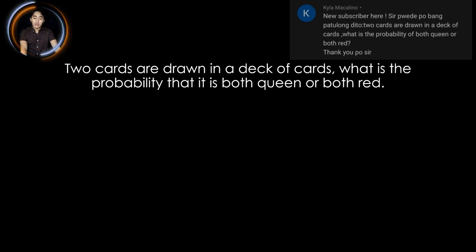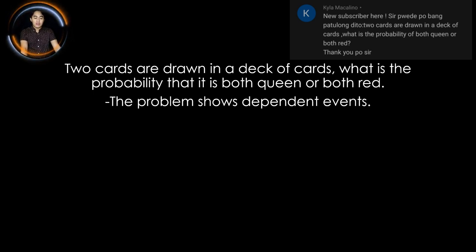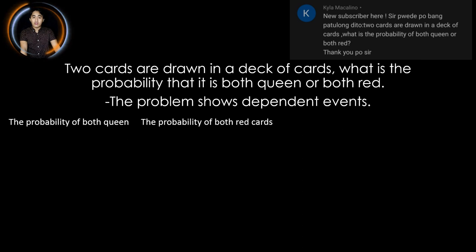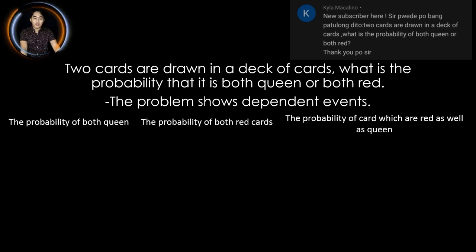Take note that if we analyze this situation, this problem shows dependent events. In this kind of situation, there are three factors to consider. First, we need to find the probability that the two cards are both queens.